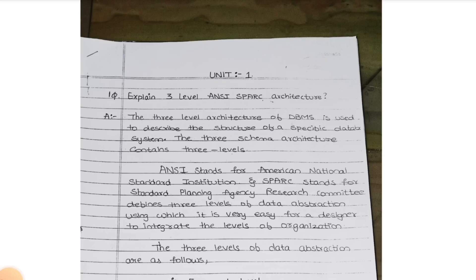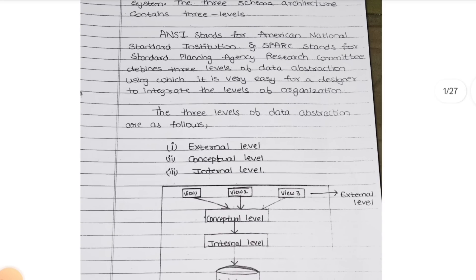It is describing the data in 3 levels - data abstraction. Whatever data we have in the database is divided into 3 types: External level, Conceptual level, and Internal level. These 3 types you need to remember and explain separately.